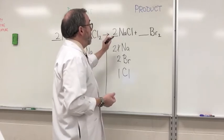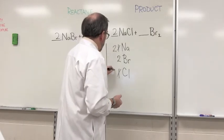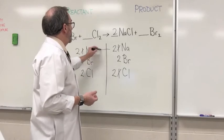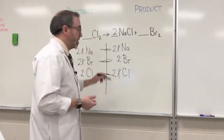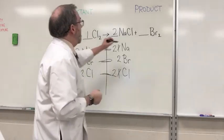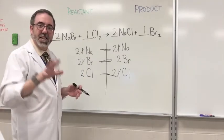But now by putting this two in here, we've changed our number of chlorines. So two. These are balanced, these are balanced, and these are balanced. Excellent. Job done. So we'll just throw one in here, one in here. Easy, right? Let's do another one.